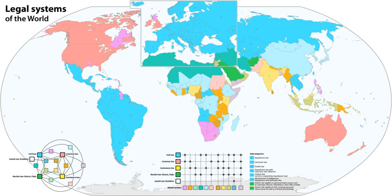Adoption of the common law in the newly independent nation was not a foregone conclusion, and was controversial. Immediately after the American Revolution, there was widespread distrust and hostility to anything British, and the common law was no exception. Jeffersonians decried lawyers and their common law tradition as threats to the new republic. The Jeffersonians preferred a legislatively enacted civil law under the control of the political process, rather than the common law developed by judges that — by design — were insulated from the political process.